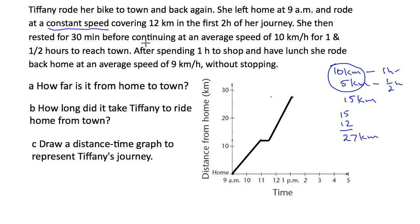She spent an hour shopping and having lunch, so that's a horizontal line. We're at 1:00 pm, so one hour later is 2:00 pm — about there. Let's draw our horizontal line in like that.